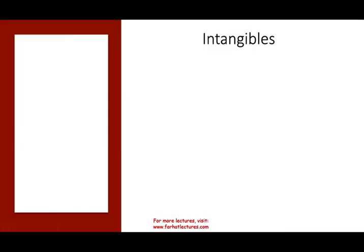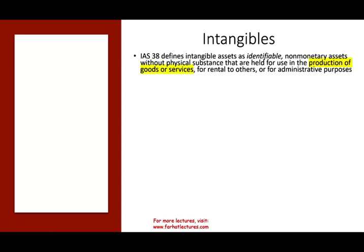So let's talk about intangibles. What are intangible assets? How does IAS define intangible? It's an asset that is identifiable — make sure you know what identifiable means because we'll be looking at assets you cannot identify. It's a non-monetary asset without physical substance. So it's not money, not a financial asset, and you cannot touch or see it.